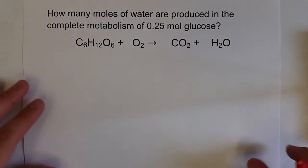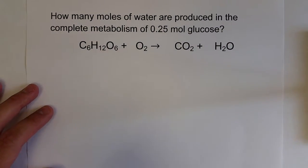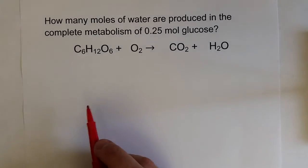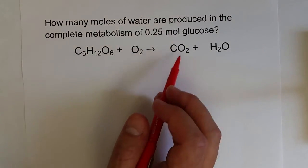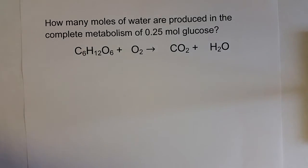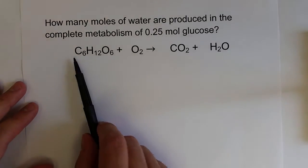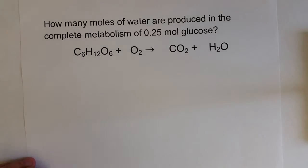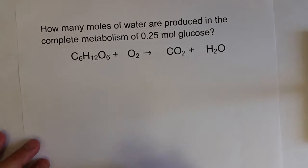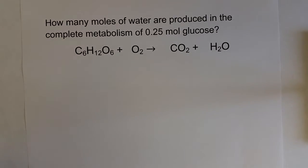Let's do a couple of examples to illustrate this concept. Here we have the net chemical reaction for cellular respiration: glucose reacting with oxygen to produce CO2 and water. If we look at this chemical reaction, we can see that it is not balanced. The relationship between reactants and products is only true with a balanced chemical equation.